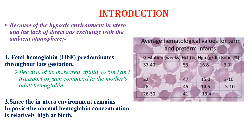Since the in utero environment remains hypoxic, the normal hemoglobin concentration is relatively high at birth. Around 37 to 40 weeks, the hematocrit is around 53%, whereas around 32 weeks it is around 47%.